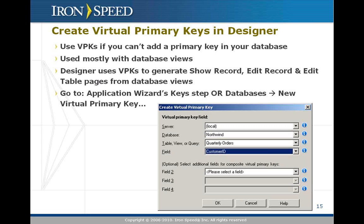You create a virtual primary key either in the application wizard's key step or in the database's pull-down menu. The app wizard's key step is the best place to do it because it creates the virtual primary key before you create your web pages, letting the application wizard create the broader set of pages that might take advantage of that virtual primary key.